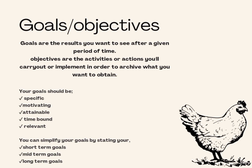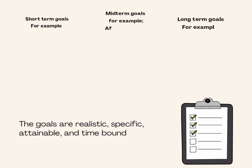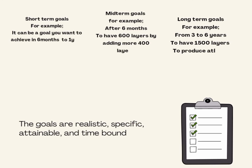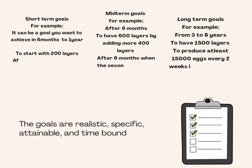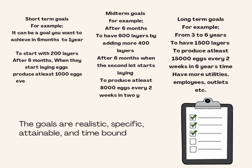You can simplify your goals by stating your short-term goals, mid-term goals, and finally long-term goals. For example, a short-term goal can be something you want to achieve in six months to one year's time — by starting with 200 layers, and after six months when the birds start laying eggs, the farm can start producing 1,000 eggs every two weeks annually. Repeat the same strategies for mid-term and long-term goals as well.